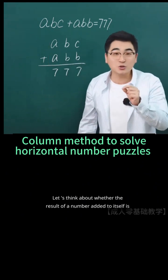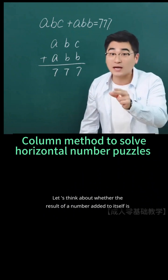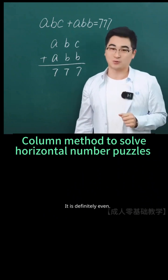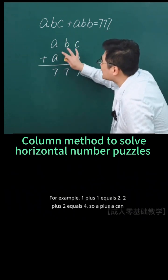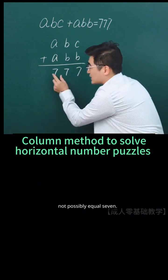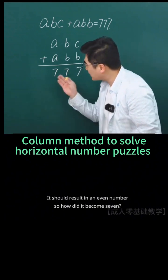Let's think about whether the result of a number added to itself is odd or even. It is definitely even. For example, 1 plus 1 equals 2, 2 plus 2 equals 4. So A plus A cannot possibly equal 7. It should result in an even number. So how did it become 7?